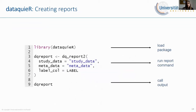You can call many data quality checks individually via single functions, but you can also compile a complete report using just a few lines of code. Which data quality checks are included in the report depends on the available metadata. For the metadata argument, you can pass the name of the data frame as a string, a file name, or a URL. These tables are cached when looked up, so if you use them again they will already be in the cache. You can also populate the cache manually.